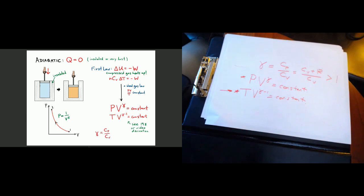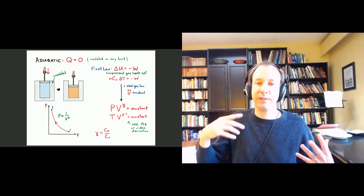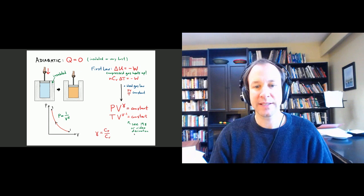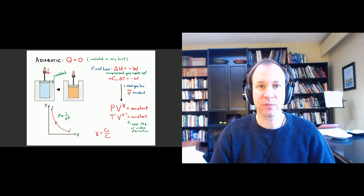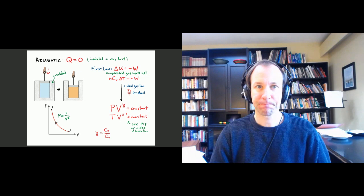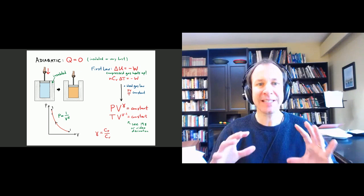Going forward, we don't need to do these derivations every time we analyze an adiabatic process. We can just use PV^γ = constant to predict final pressures, and TV^(γ−1) = constant to predict final temperatures. That was a lot of talking. The rest of the class, we're going to do some examples and actually make use of all these formulas for adiabatic processes.